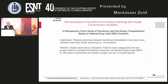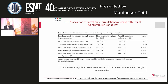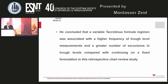In a retrospective study, stable adult kidney transplant patients were categorized into two groups — fixed and variable formulations — based on tacrolimus formulation usage over a 12-month period. Tacrolimus dose adjustment was found in 2.4% of the fixed tacrolimus regimen group and 2.8% in the variable tacrolimus regimen group. They concluded that a variable tacrolimus formulation regimen was associated with a higher frequency of trough level measurements and a greater number of excursions in trough level compared with a fixed formulation.